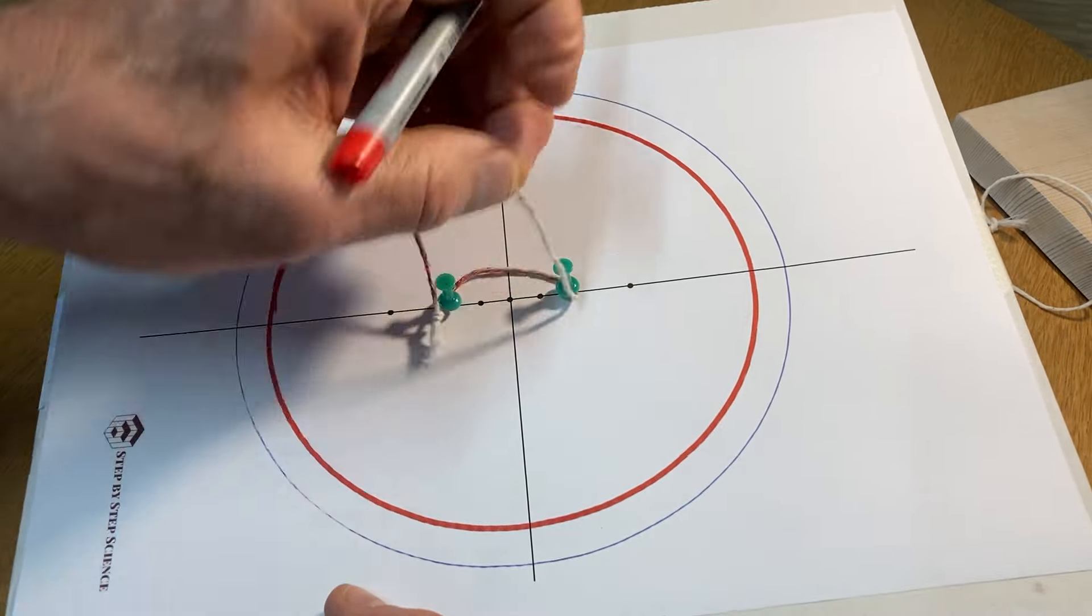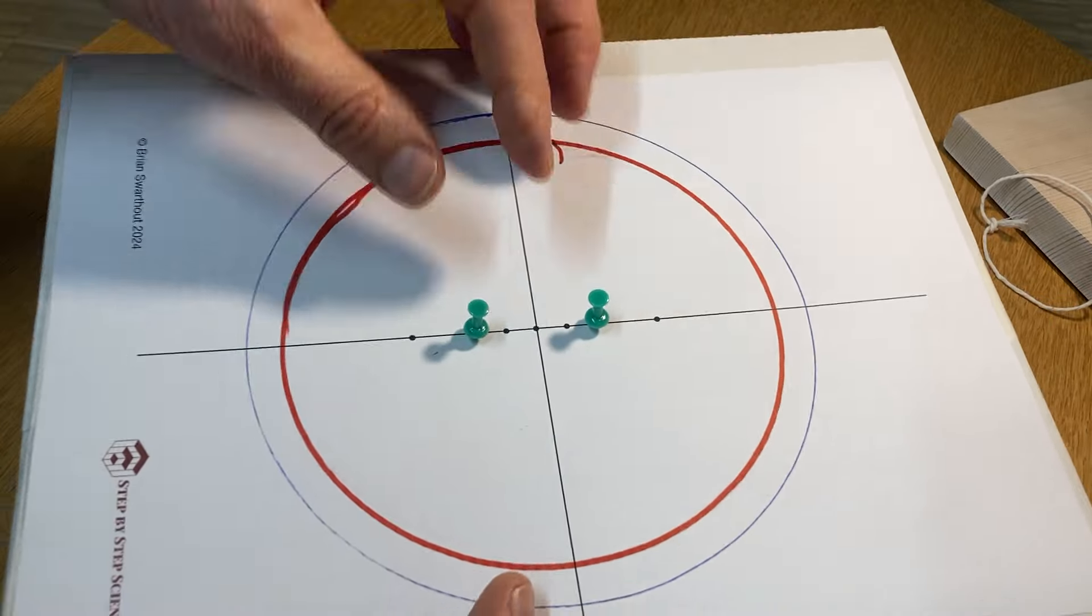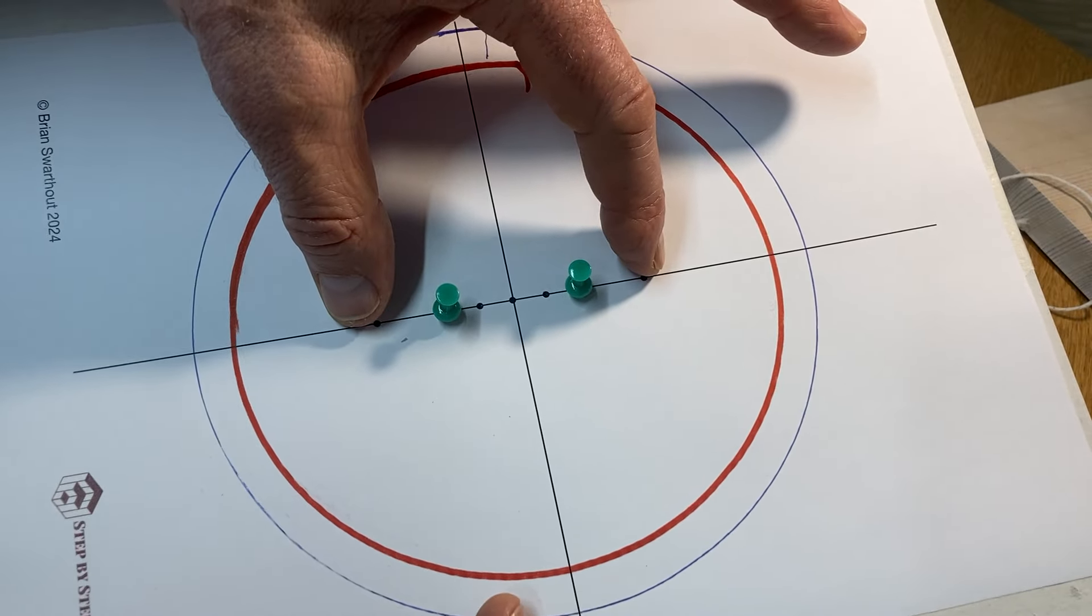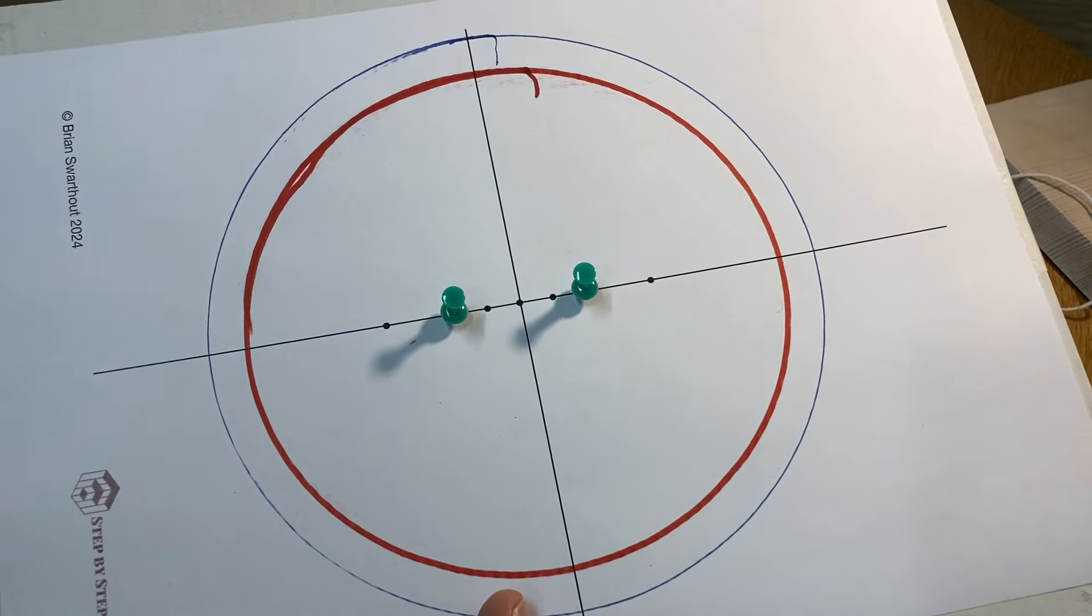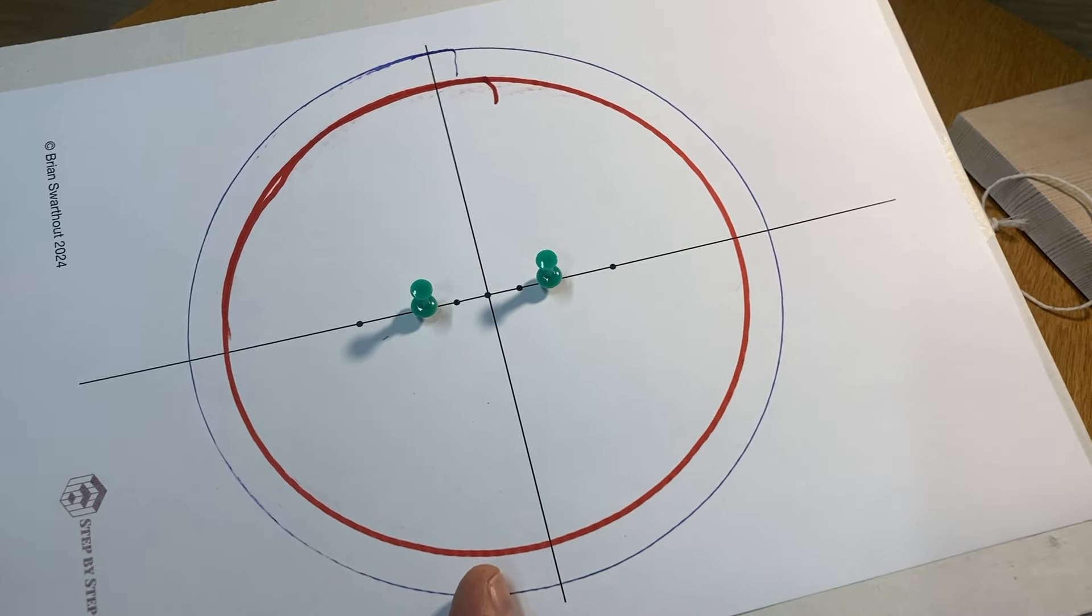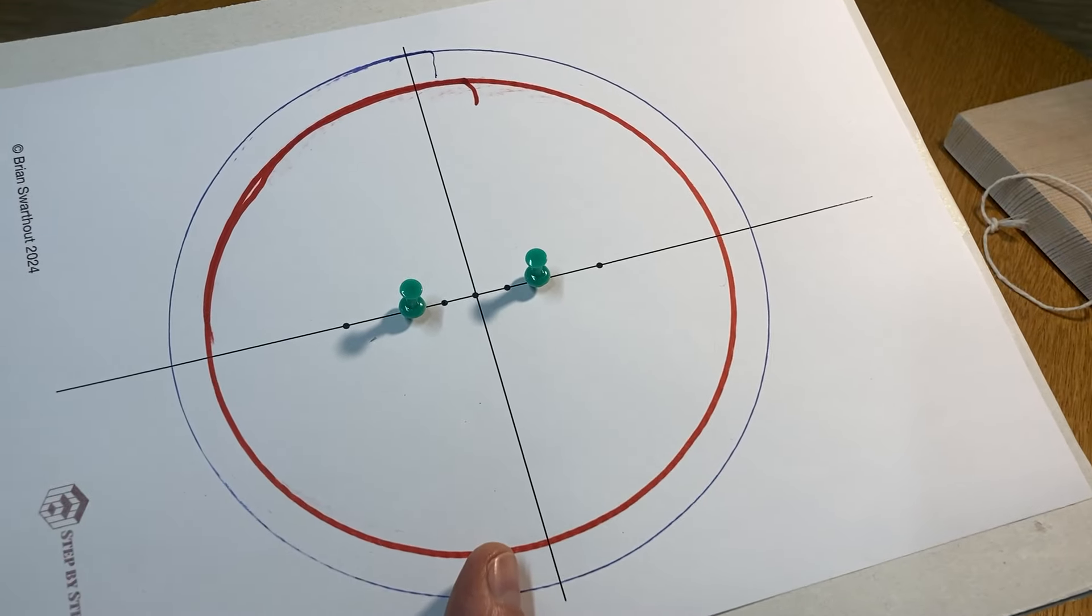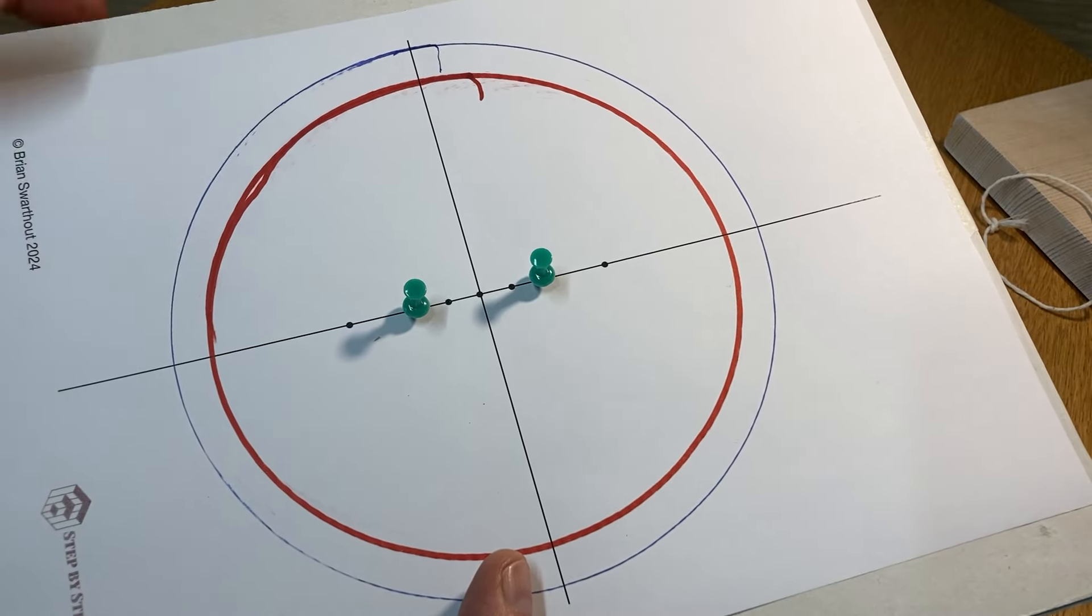The third ellipse you're going to draw by taking the pins and moving them so they're each four centimeters away and you draw your third ellipse. Once you've drawn the third ellipse, then you're ready to take your measurements, calculate your eccentricity, learn about Kepler's laws and planetary orbits and elliptical orbits, and you're all ready to go.